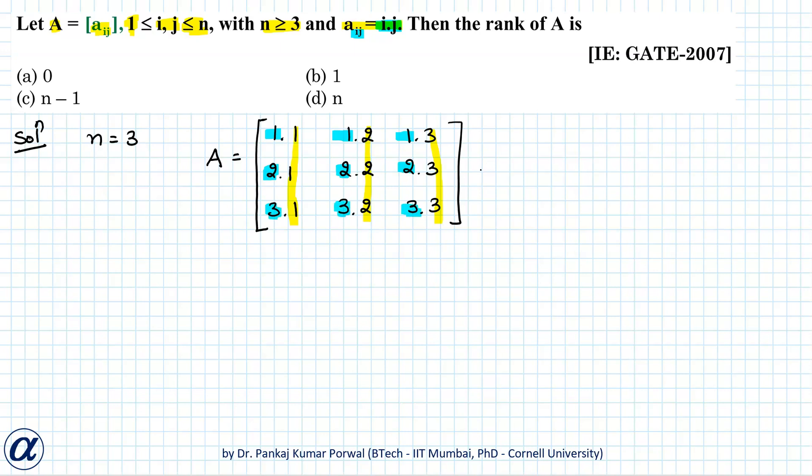So my matrix will become 1 squared times 2 squared times 3 squared taken common, and all the elements will become 1.